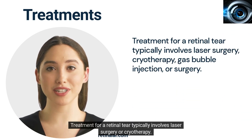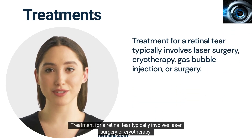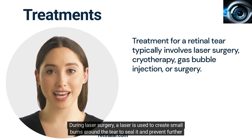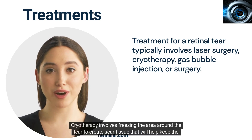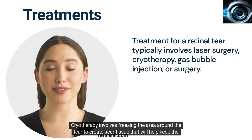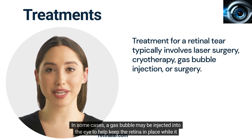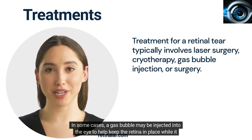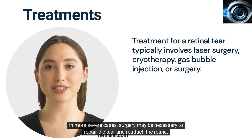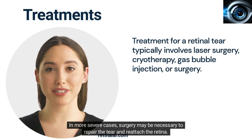Treatment for a retinal tear typically involves laser surgery or cryotherapy. During laser surgery, a laser is used to create small burns around the tear to seal it and prevent further detachment. Cryotherapy involves freezing the area around the tear to create scar tissue that will help keep the retina in place. In some cases, a gas bubble may be injected into the eye to help keep the retina in place while it heals. In more severe cases, surgery may be necessary to repair the tear and reattach the retina.